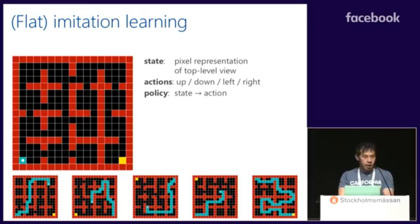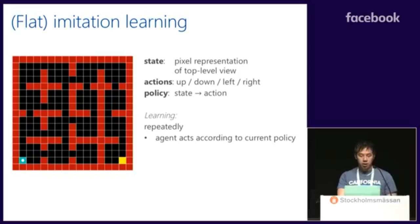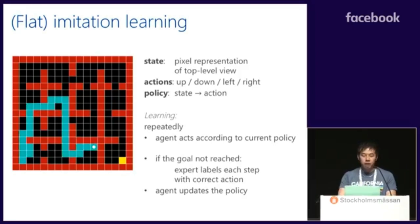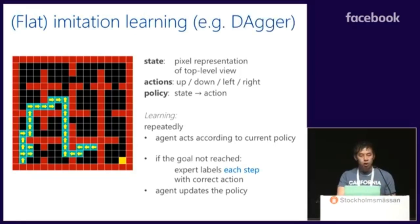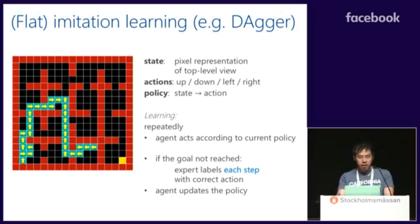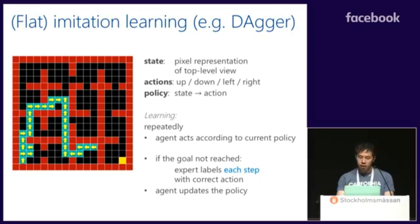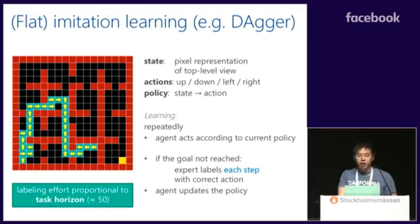A flat imitation learning scheme may work like this: the learner acts according to the current policy, and if it stumbles and gets stuck in a room, the teacher labels each step with the correct actions. For instance, if the learner was trying to go down into the wrong room, the teacher would label to go up instead. We aggregate this teacher feedback and update the learning policy using stochastic gradient descent on a multi-class classification problem. This is essentially the idea behind the DAgger algorithm, one of the most popular imitation learning algorithms. In flat imitation learning, the labeling effort is proportional to the task horizon.